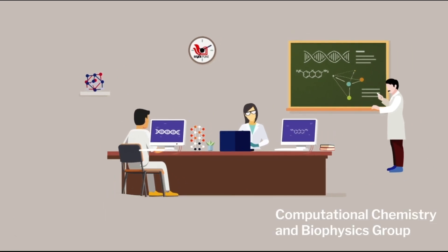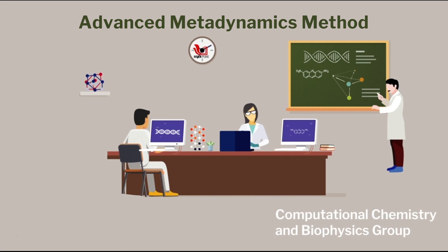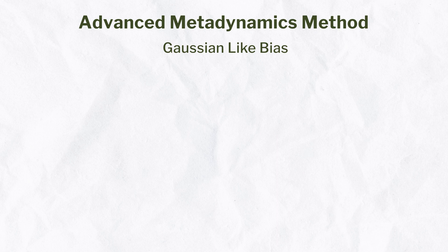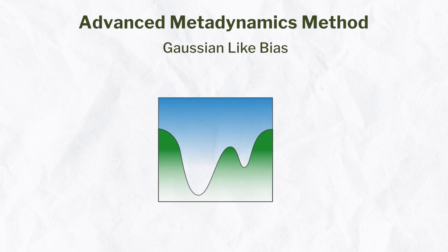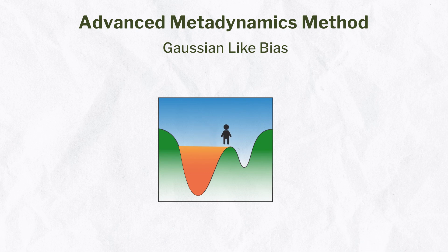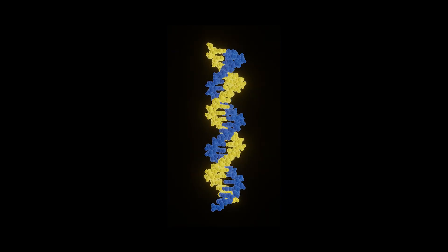The researchers at IISER Pune used a computer simulation method called the advanced metadynamics method to carry out this study. This method uses Gaussian-like bias to accelerate a process. Imagine you are trapped inside a rift and need to cross a high barrier to reach the other side. Metadynamics helps by filling up the rift — it has been informally described as filling free energy wells with computational sand, where Gaussian functions are referred to as the sand.